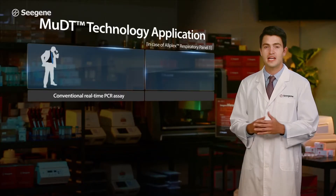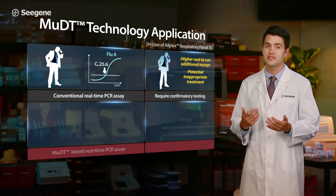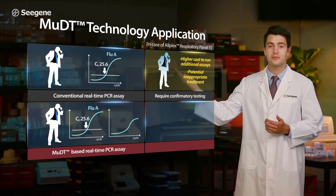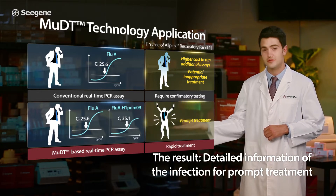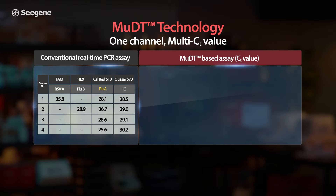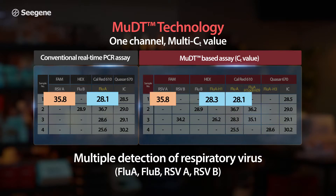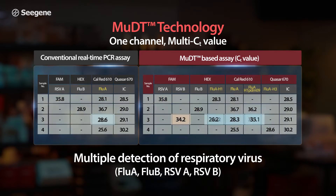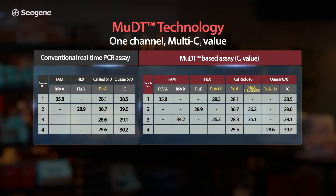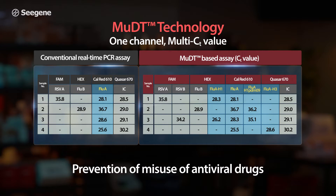MUDT is applied in Cgene's AllPlex Respiratory Panel 1. This panel can detect Flu A and its subtype simultaneously with CT values. Furthermore, Cgene's MUDT-based AllPlex Respiratory Panel 1 provides infection information of other concomitant respiratory virus infections, providing a clear understanding of the complete disease state and supporting faster and better patient care.